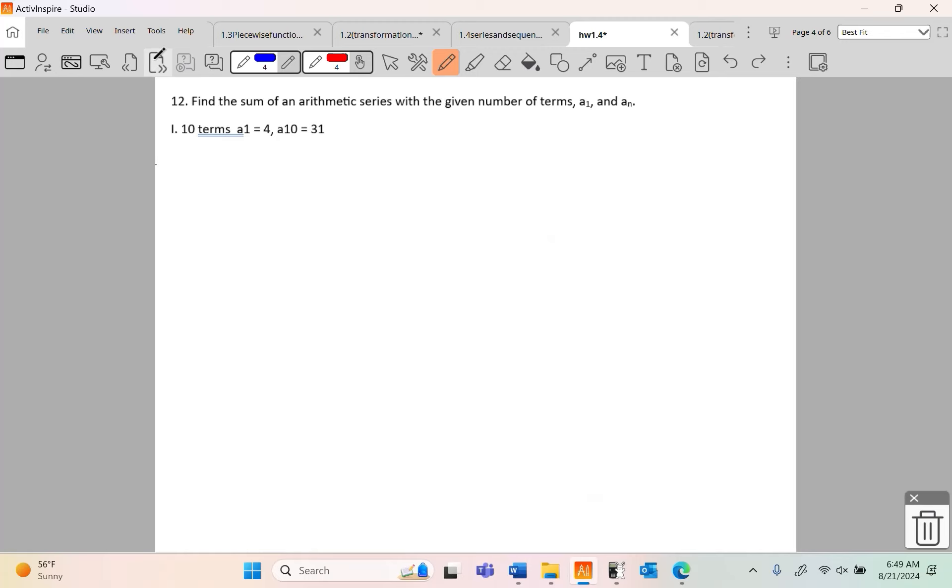Moving on to 12. Find the sum of an arithmetic series with a given number of terms, a sub 1 and a sub n. So it's 10 terms, and the first term is 4 and the 10th term is 31. You're supposed to find the sum. So this is a formula given to us by Gauss. It says the sum of n things is n over 2 times a sub 1, which is the first term, plus a sub n, which is the last term.